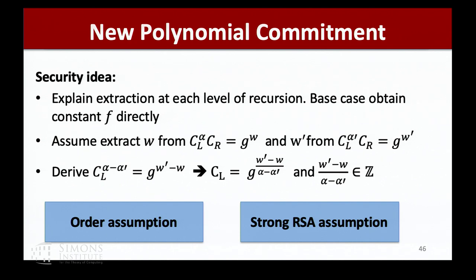The order assumption is implied by the adaptive root assumption, so we really only have two assumptions: the adaptive root assumption and the strong RSA assumption. If we want a non-interactive protocol, we apply the Fiat-Shamir transform. It's a logarithmic-round protocol, so there are some issues there, but we use it as a heuristic as is common in the literature.